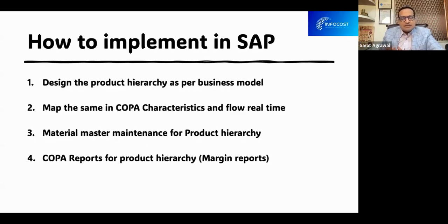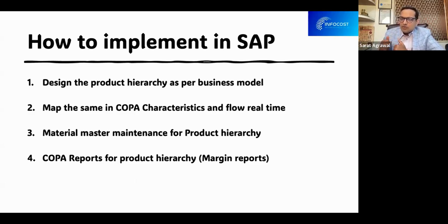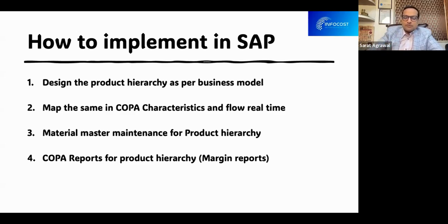How do we implement these things in SAP? First we need to design the product hierarchy as per the business model, map it in the COPA characteristics, and flow that in real time. Material master maintenance for product hierarchy is one of the most important things — we need to maintain the product hierarchy in the material master. And then get the reporting done by using COPA reports.